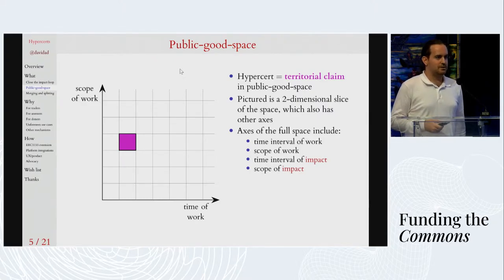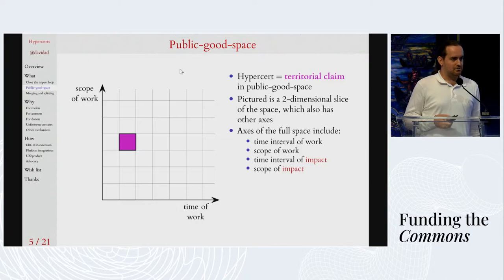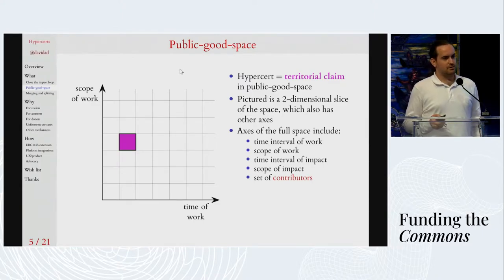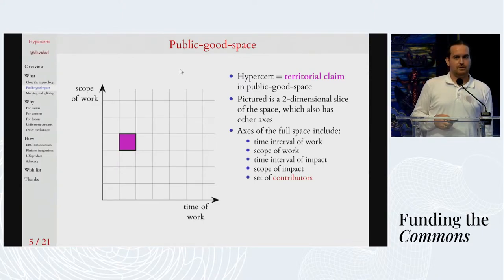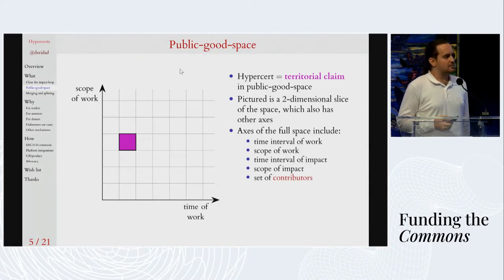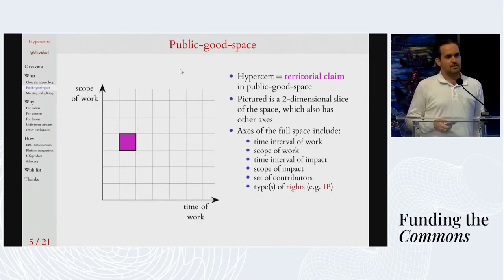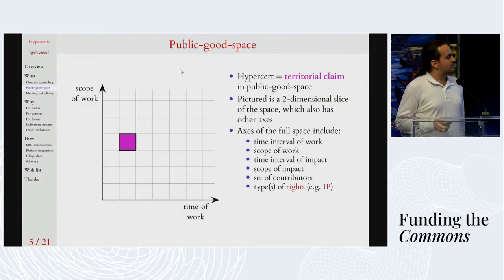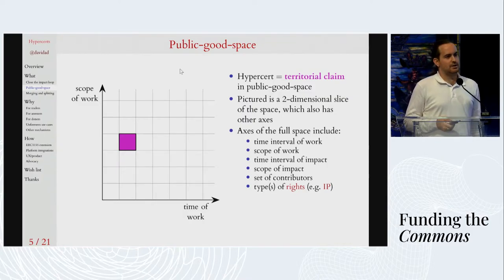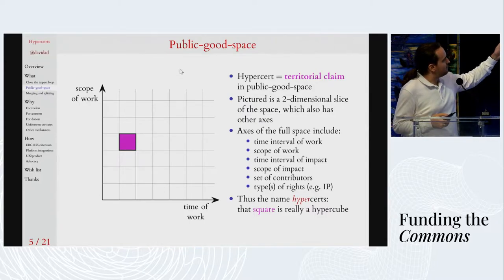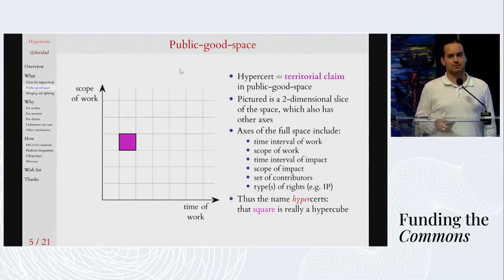Different kinds of funders might be interested in different sorts of impact, ranging from carbon capture to averting an existential catastrophe from AI. There's also an axis for the set of contributors who are included, with an invariant that all listed contributors consented to the minting of the certificate. There are different types of rights — most will be the right to retroactive altruistic rewards, but some retain only bragging rights, while others may include the right to passive income from intellectual property licensing auctions. The name 'hypercerts' reflects that it's really a hyperspace, and a hypercert is a hypercube — or claim on a hypercube — in that region.